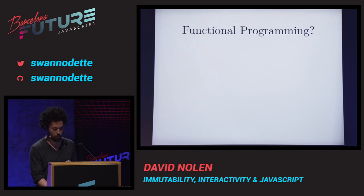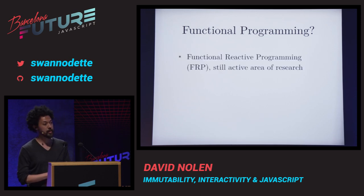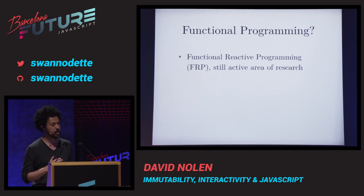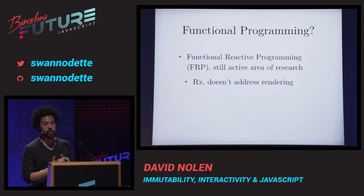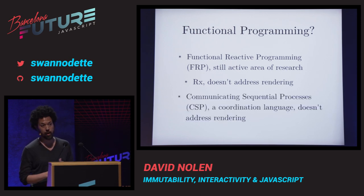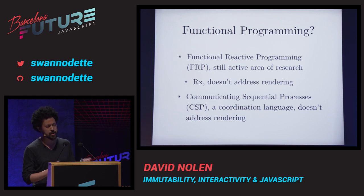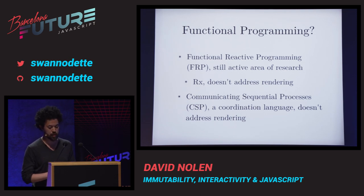If you follow functional programming, which is getting more and more popular, you might have heard of FRP — functional reactive programming. It came out of Haskell and pure FRP is still very much an active area of research because people are trying to figure out how to make it efficient. You might have heard of Rx — reactive extensions — which is Microsoft's take on FRP. Fundamentally though, it's a coordination language. It doesn't really address the fact that at the edge you're going to have to mutate the DOM. Similarly, CSP and ES6 generators are great for streams but still don't solve the rendering problem.